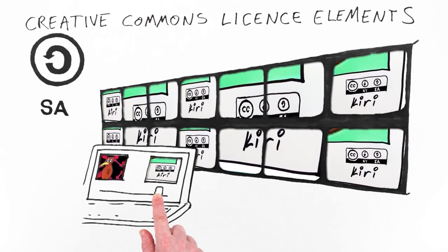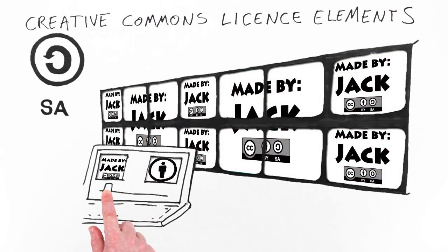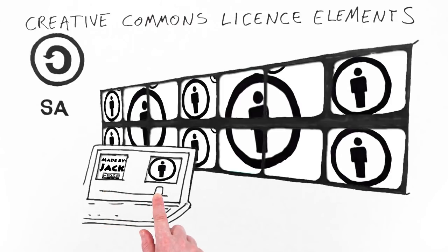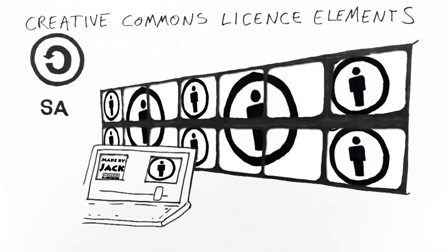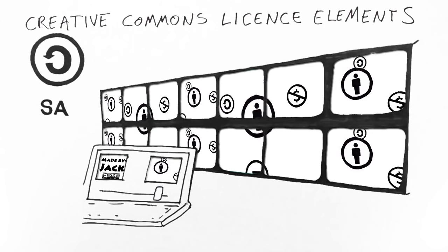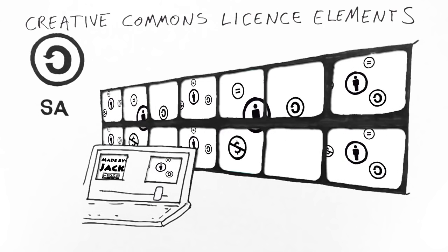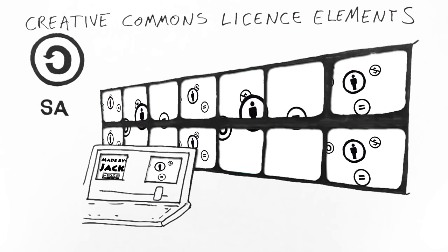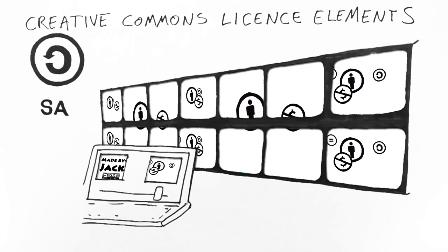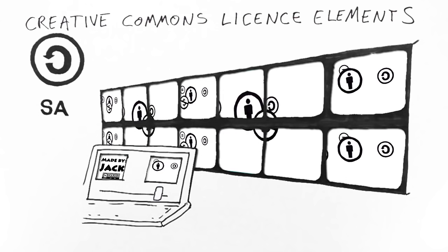Each Creative Commons license gives permission to share and includes the Attribution rule. So people who find your Creative Commons licensed work are automatically allowed to share it, but are required to acknowledge you if they do. The other three license elements are optional, and you can choose which ones to add, if any.